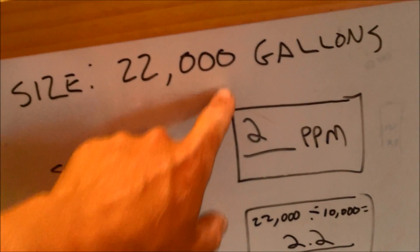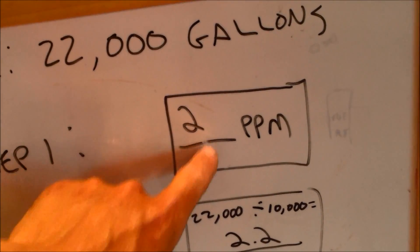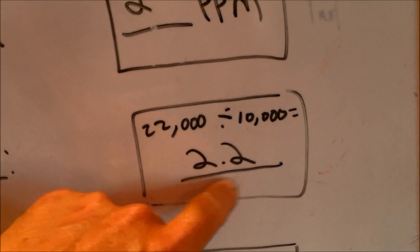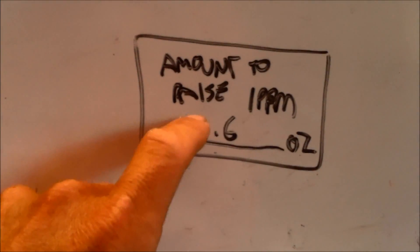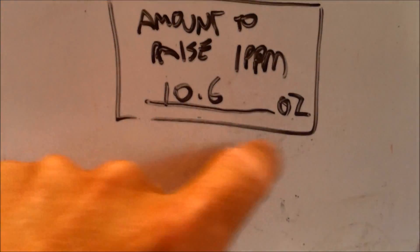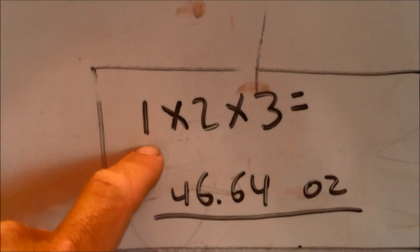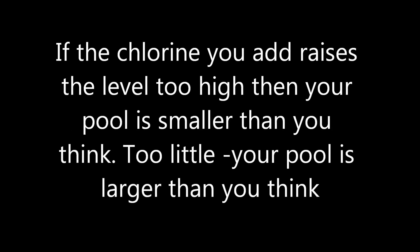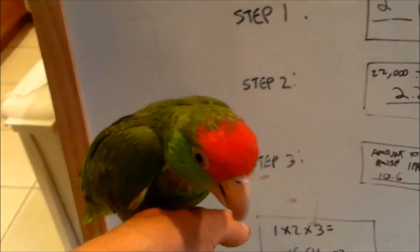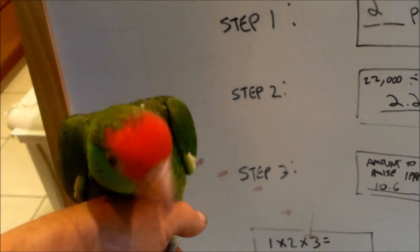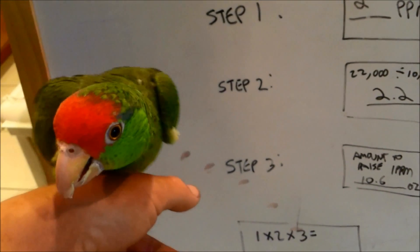To recap: pool size is 22,000 gallons. Step 1 is how much you want to raise it — 2 parts per million. Step 2, take the gallons (22,000) divided by 10,000, giving you 2.2. Step 3, it takes 10.6 ounces of 12% liquid chlorine to raise it 1 ppm — get this from the chart in the comments. Multiply box 1 by box 2 by box 3 and that gives you how much chlorine to add. If results are off, your pool size estimate may need adjustment.